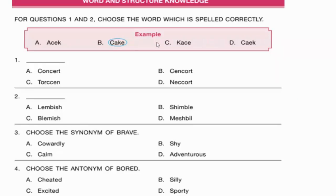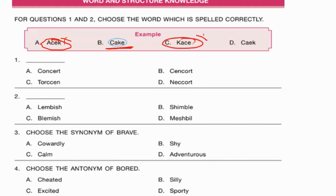For question one, the first option is 'acets' — we don't have any such word, so this is absurd. The second option is 'cake' — yes, we do have the word cake, we use it for birthdays and anniversaries. Check the spelling: C-A-K-E — yes, that is correctly spelled. The third option 'kace' and fourth option 'caeke' make no sense. So the correct answer is cake.